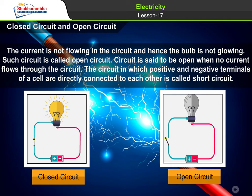Closed circuit and open circuit: When current is not flowing in the circuit, the bulb is not glowing — such a circuit is called an open circuit. A circuit is said to be open when no current flows through it. A circuit in which the positive and negative terminals of a cell are directly connected to each other is called a short circuit.